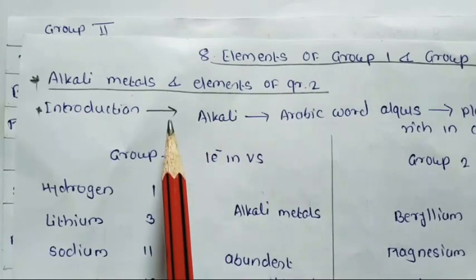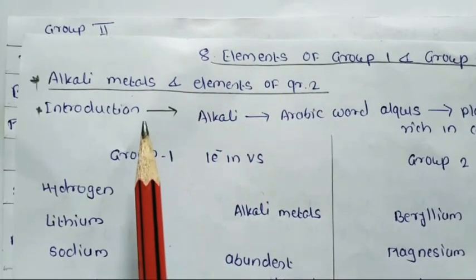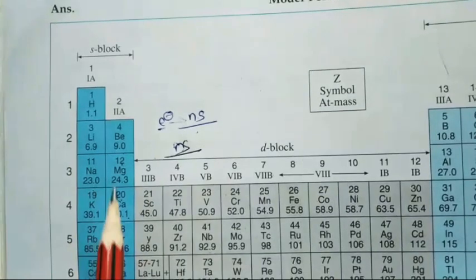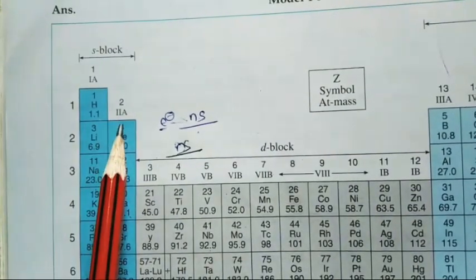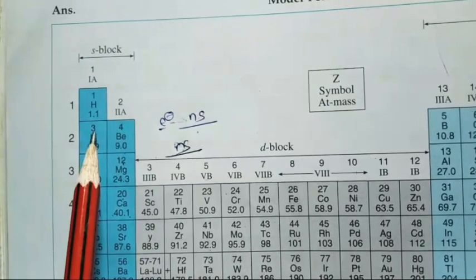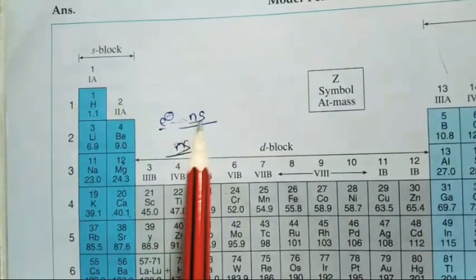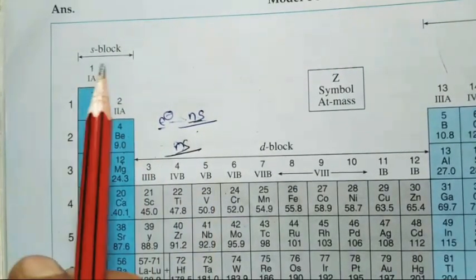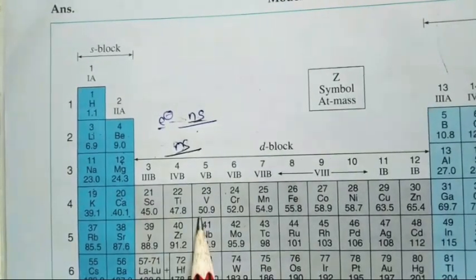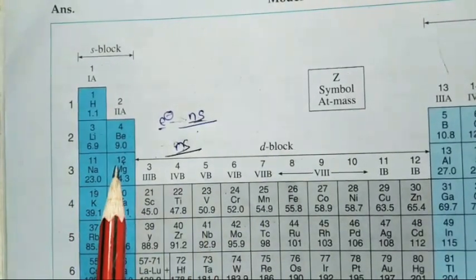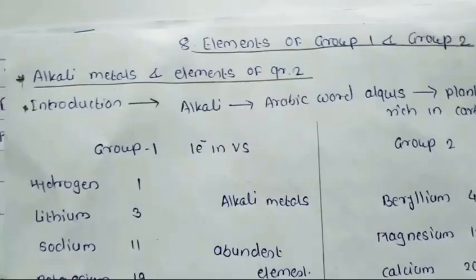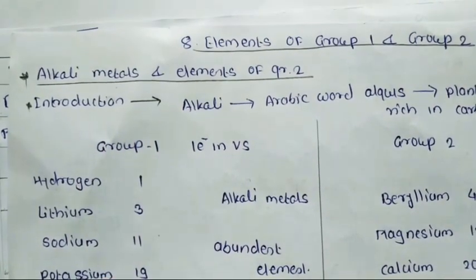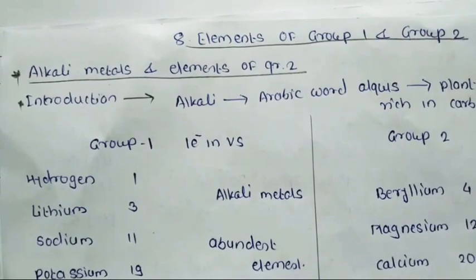Alkali metals and elements of group second are placed on the left side in the periodic table. In this periodic table, this is the first group and this is the second group. Both groups have their last electron entering the s-subshell, so both first and second groups belong to s-block elements, placed on the left side.